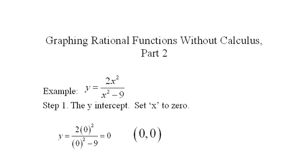Graphing Rational Functions Without Calculus, Part 2. In our second example, we start exactly the same way. We take this y equals 2x squared over x squared minus 9, and we first find the y-intercept.